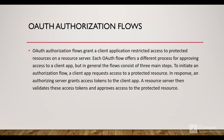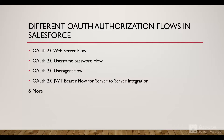OAuth authorization flows grant a client application restricted access to protected resources on a resource server. Each OAuth flow offers a different process for approving access to a client app, but in general the flow has three main steps: the client app requests access, the authorization server grants an access token, and the resource server validates the token and approves access. In Salesforce we have the OAuth 2.0 web server flow, the username-password flow, the user agent flow, the JWT bearer flow for server-to-server integration, and many others.